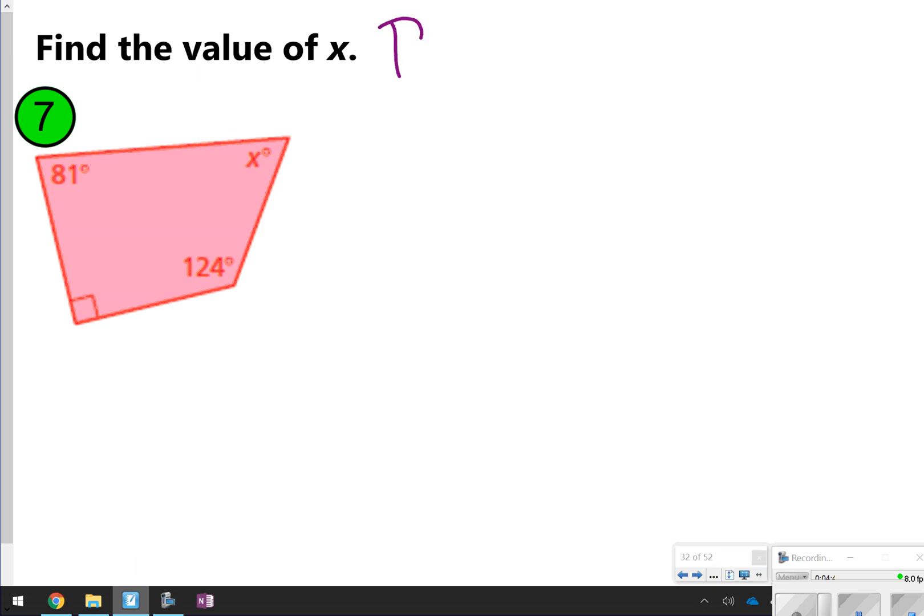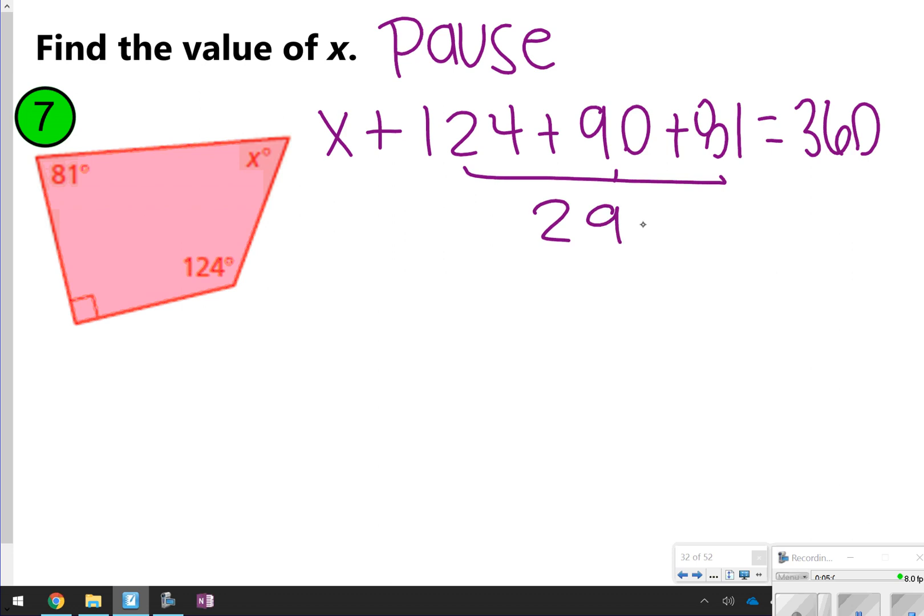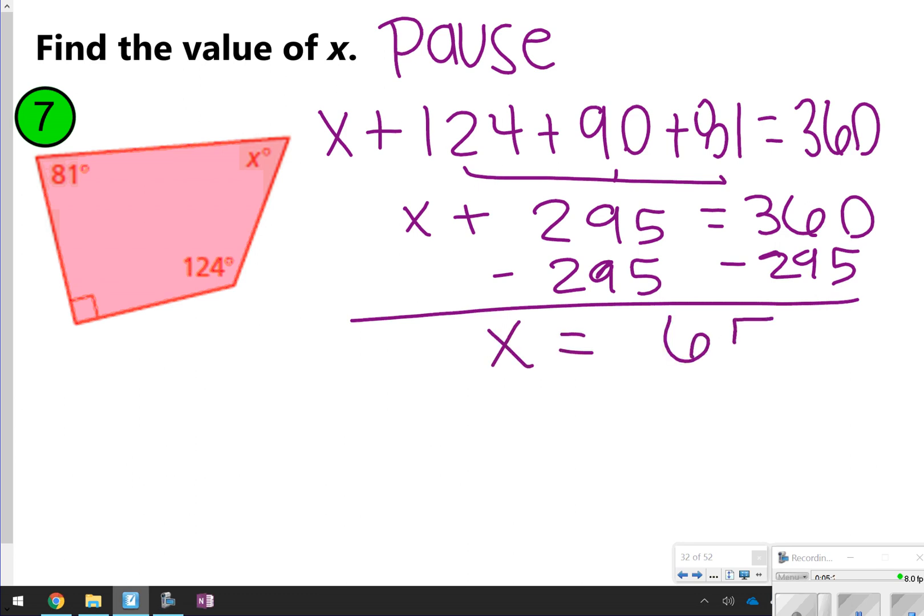Again, let's go ahead and take time now to pause and try number 7. Once you're done, click play to check your work. All right, so we've got our equation, x plus 124 plus 90 plus 81 equals 360. When we add all of these numbers together, you should get 295. So x plus 295 equals 360. And then all we're going to do is subtract 295 from 360. So for this one, x will be equal to 65. How'd you do?